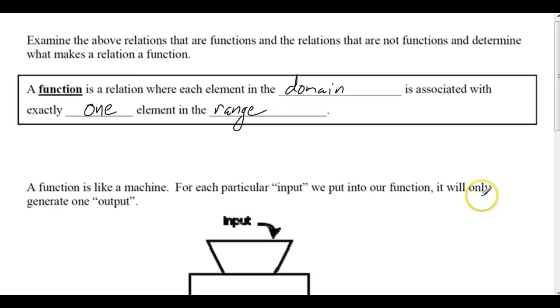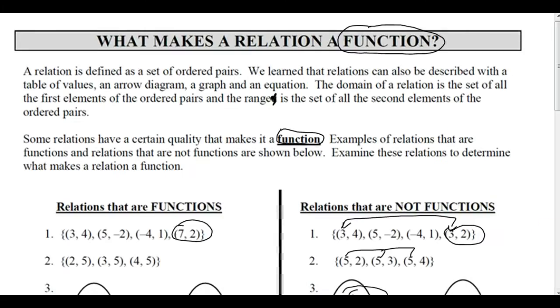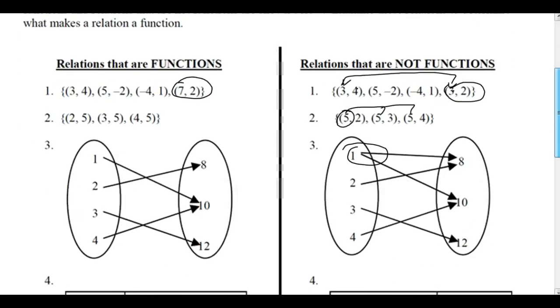Okay, so let's go back and look at the things that aren't functions. So 3 goes with 4, but 3 also goes with 2, not a function. 5 goes with 2 and 3 and 4. So the domain element 5 is associated with 3 different elements there, not a function.